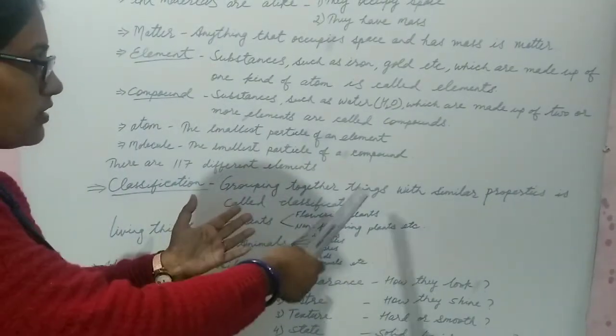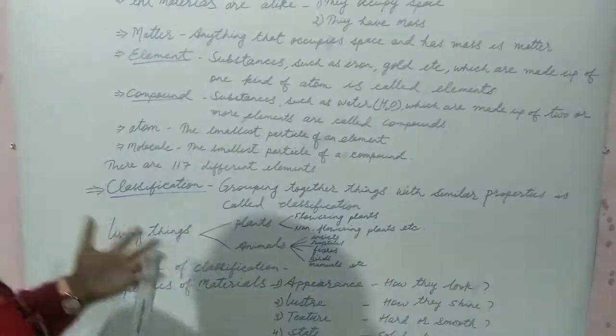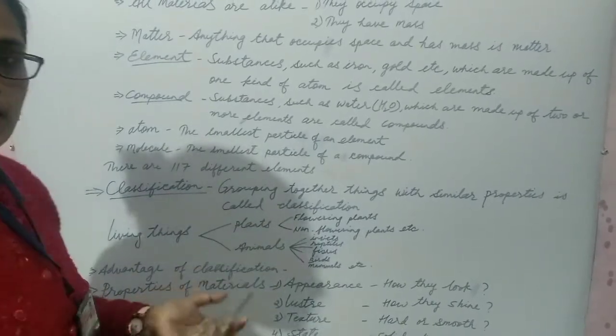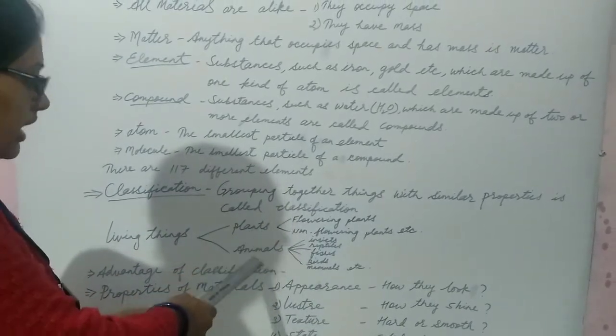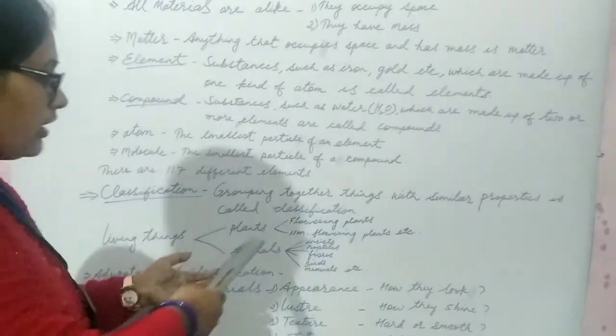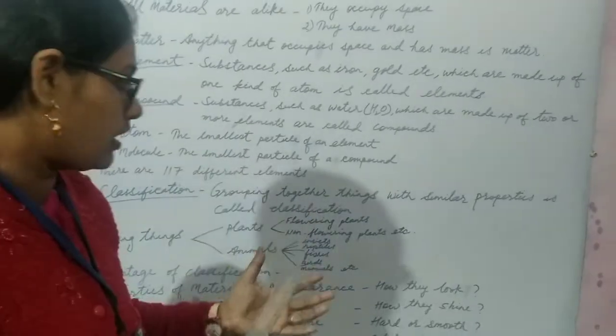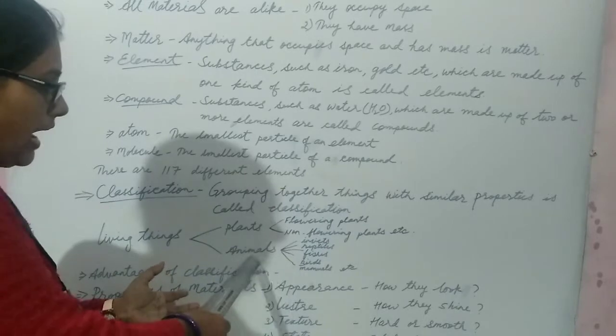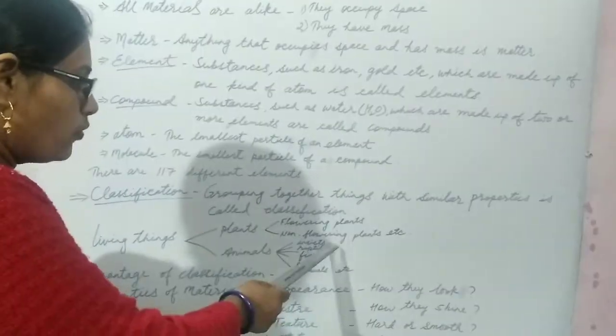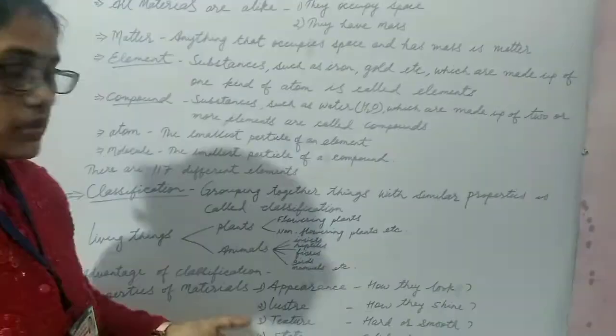Now grouping things with similar properties is called classification. Living things are also categorized. Are also classified. Like plants and animals. Living things are grouped into plants and another criteria as animals. Again the plants are classified into flowering plants and non-flowering plants. And animals can be divided into insects, reptiles, fishes, birds, mammals etc.